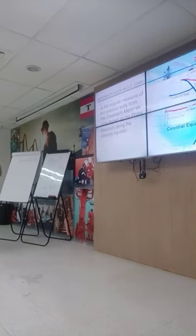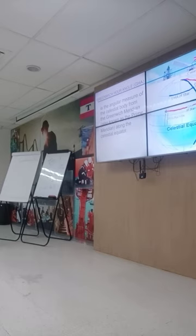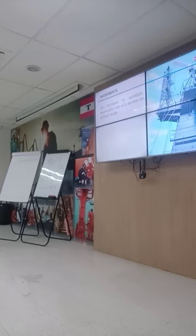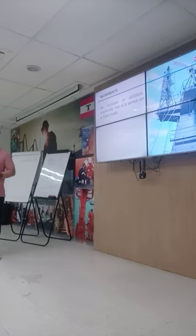GHA, or the Greenwich Hour Angle, is the angular measure of the celestial body from the Greenwich meridian — also known as the prime meridian — measured along the celestial equator. Increments are the addition to degrees, minutes, and seconds — an increase on a fixed scale added to the GHA value.